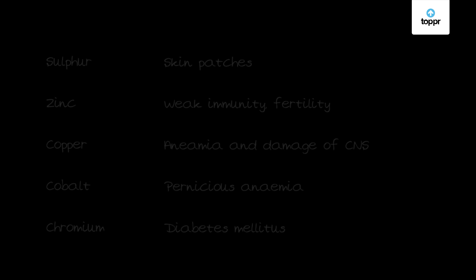Next is sulfur. Sulfur is a component of hormones such as insulin, important for normal metabolism, and present in some amino acids such as methionine and cysteine. The deficiency of sulfur causes skin patches and problems with metabolism.